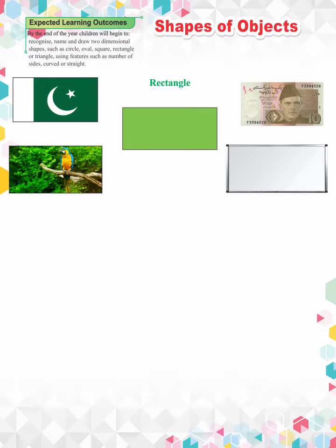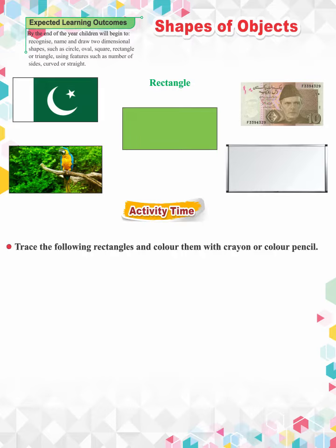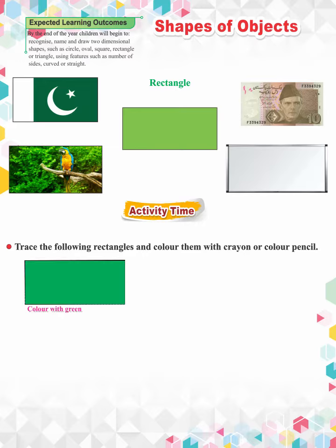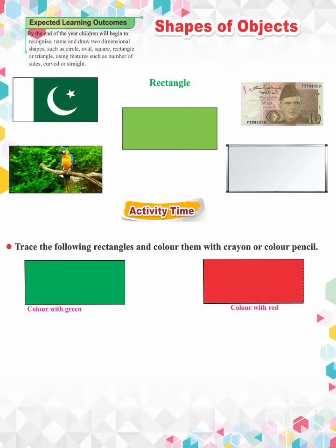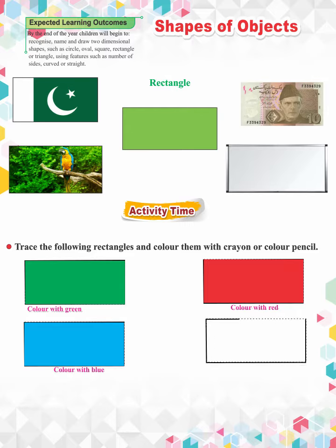Well done. It is activity time now. Trace the following rectangles and color them with crayons or colored pencils. Color this rectangle in green. Color this rectangle in red. Color this rectangle in blue. Color this rectangle in yellow.